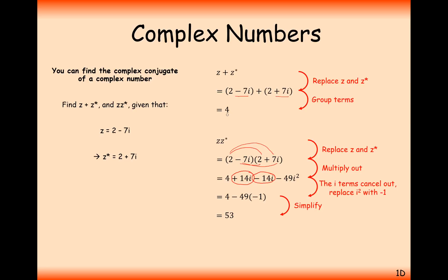You can see that both multiplying and adding together these two complex numbers gives us real parts only — no imaginary parts — which is quite interesting. And that fact is always true when you add Z and Z star together, and when you multiply Z and Z star together.